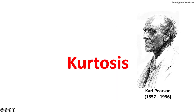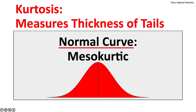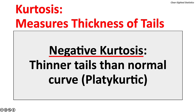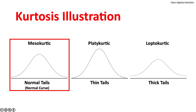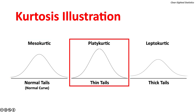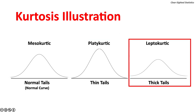Kurtosis is another measure developed by Carl Pearson. It measures the thickness of the tails in a continuous probability distribution. A normal curve is mesokurtic. Negative kurtosis means thinner tails than a normal curve and is called platykurtic. The curve on the left is mesokurtic — its tails are considered normal. The curve in the center is platykurtic — its tails are thin. The curve on the right is leptokurtic — it has thick tails.